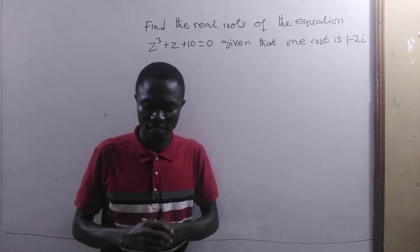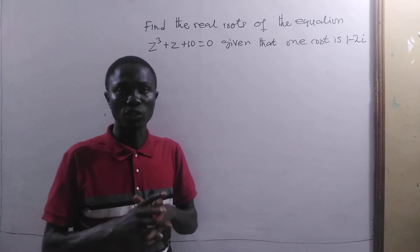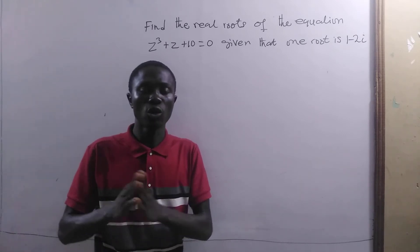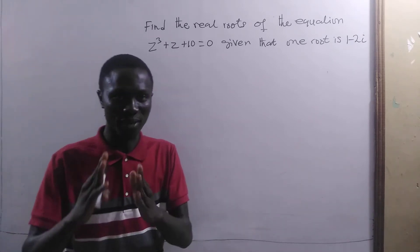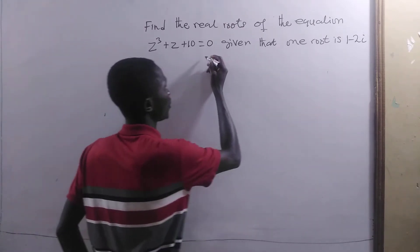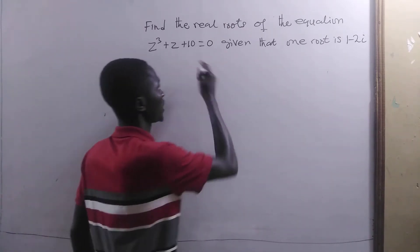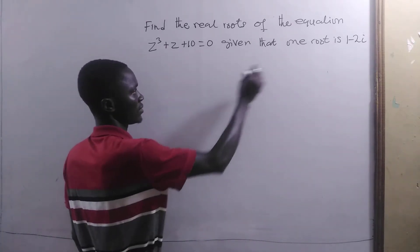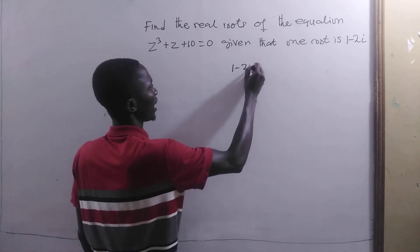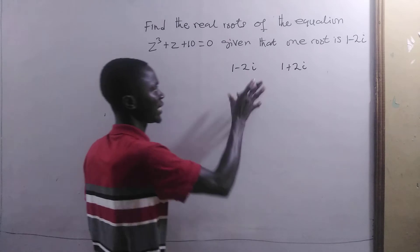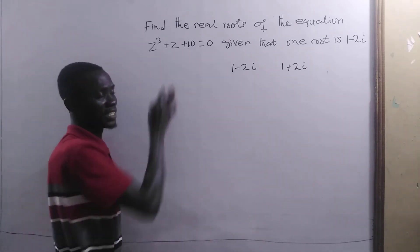Now we have that if a polynomial equation with real coefficients has complex roots, they occur in conjugate pairs. It means that since one of the complex roots of this equation is 1 - 2i, then the root 1 - 2i and its conjugate 1 + 2i are both roots of this equation.